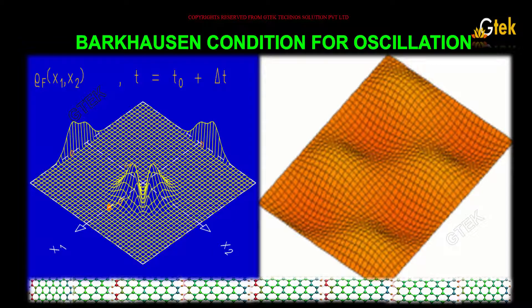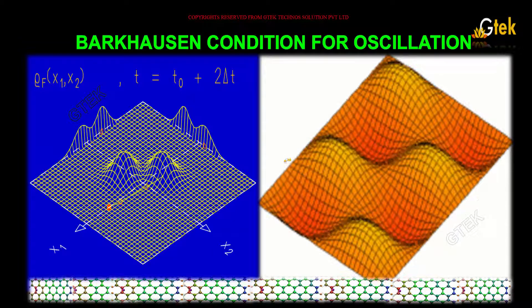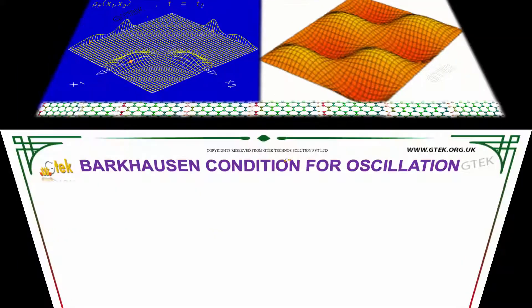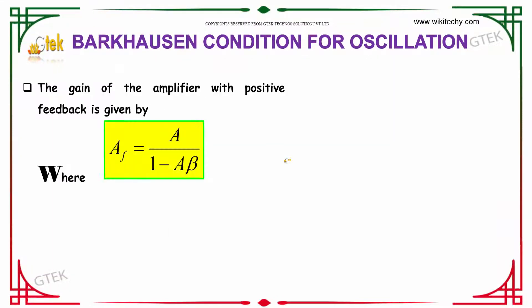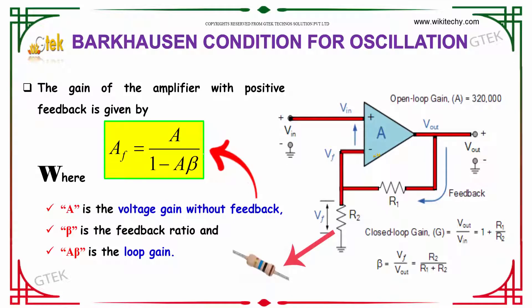Let's move on to Barkhausen condition for oscillations. The gain of the amplifier with positive feedback is given by AF equals A divided by 1 minus beta into A.